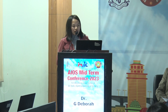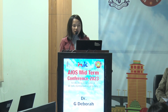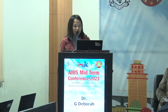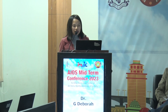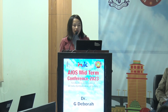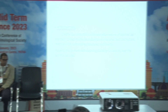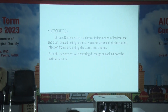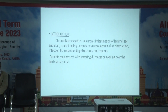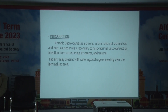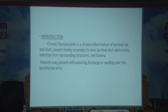Introduction. Chronic Dacryocystitis is a chronic inflammation of the lacrimal sac and duct, caused mainly secondary to nasolacrimal duct obstruction, infection from surrounding structures, and trauma. Patients may present with watering, discharge, or swelling over the lacrimal sac area.